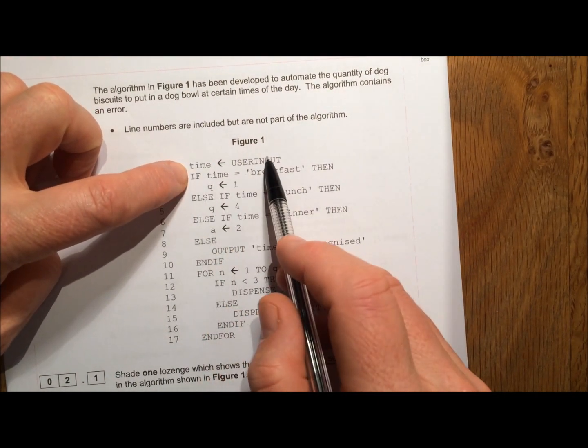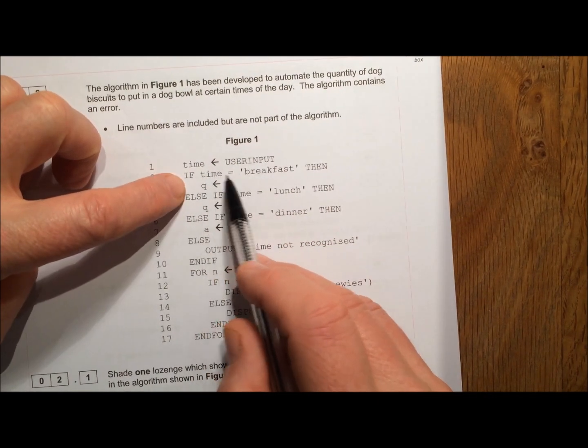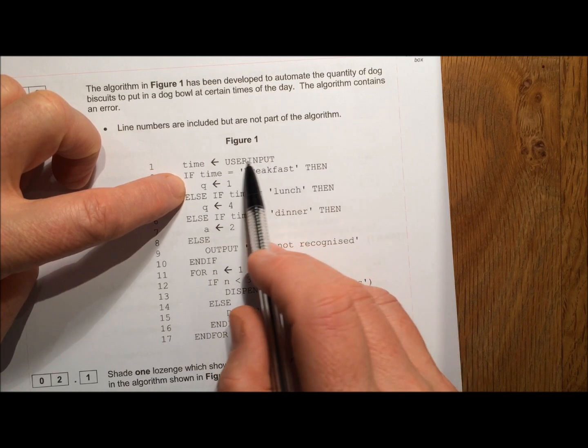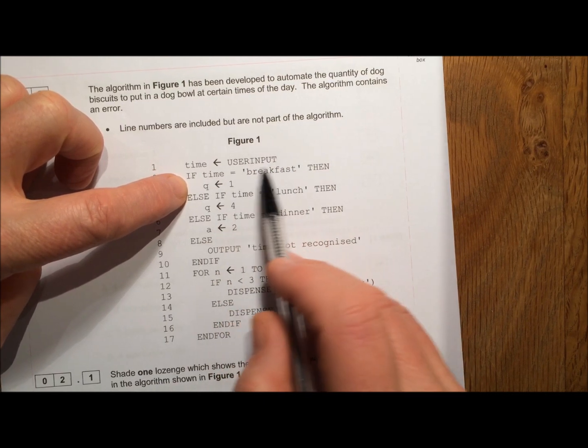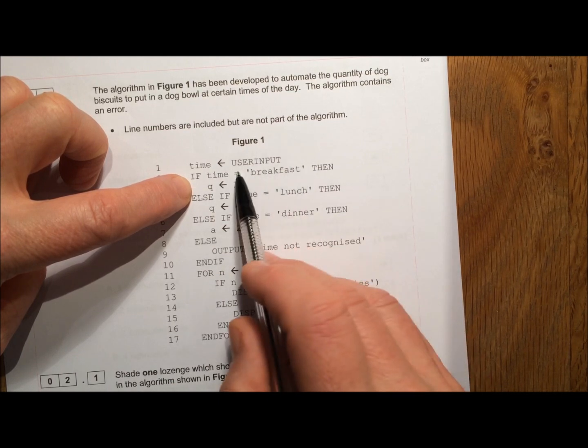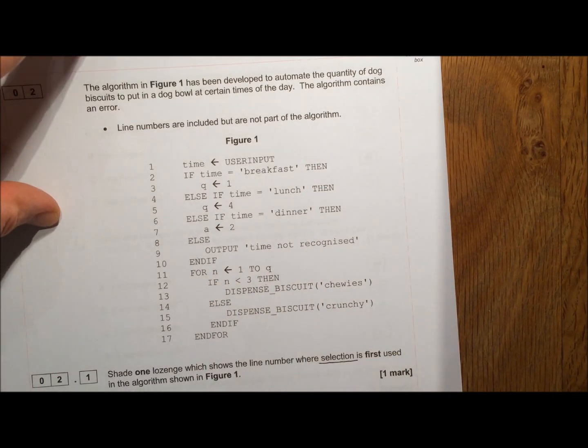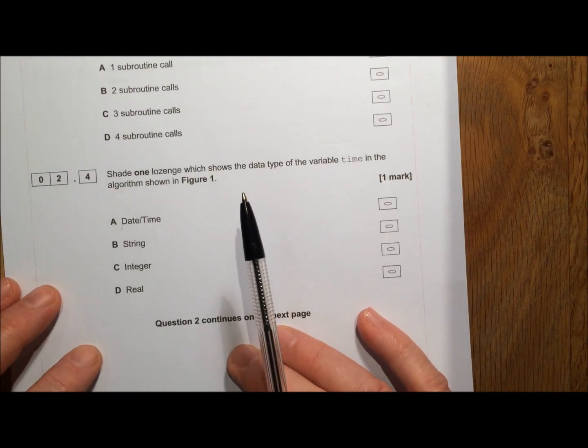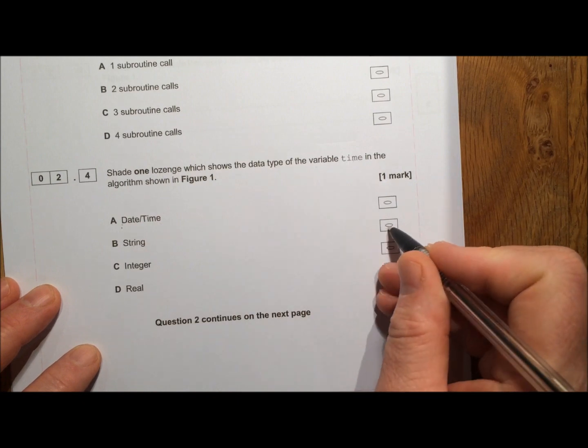So when time gets user input, if time equals and we've got a word being used inside speech marks. So text inside speech marks is the string data type. So the correct answer to this question is string.